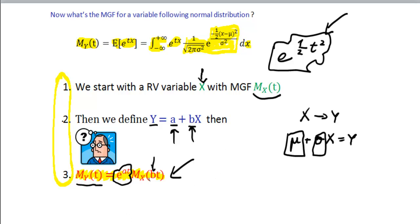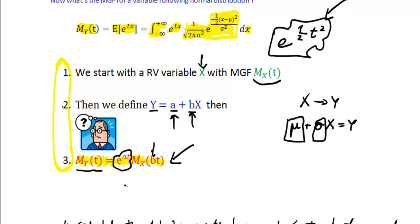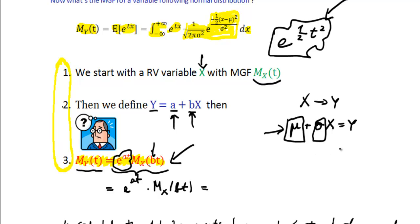So let's do it — it should take us a few seconds. The MGF of Y equals e^(at) times M_X(bt). Now I replace a and b with the corresponding constants of interest, namely μ and σ. So we write e^(μt) times M_X(σt).